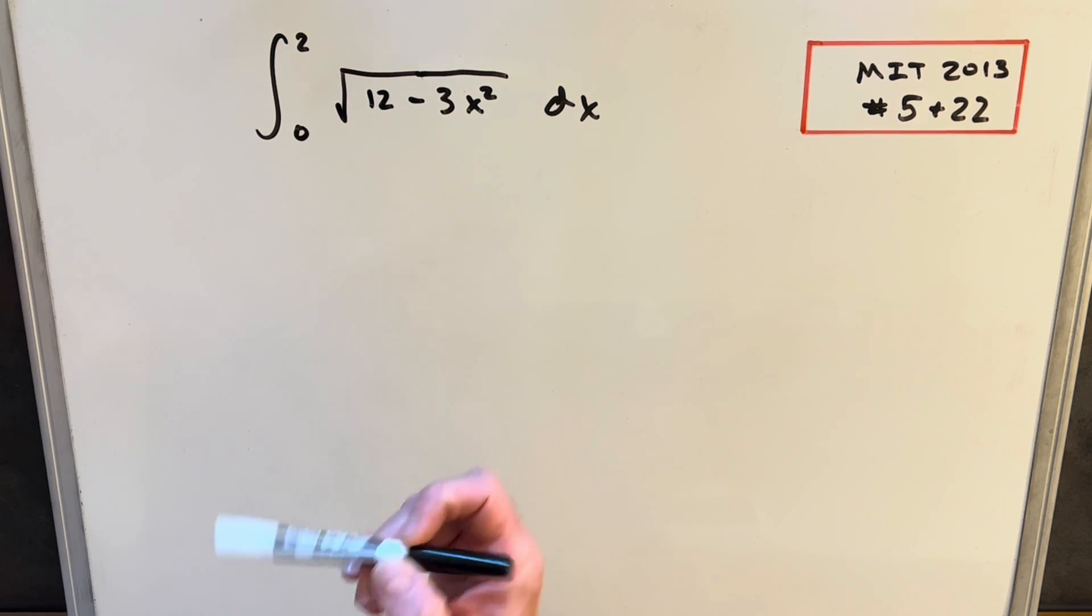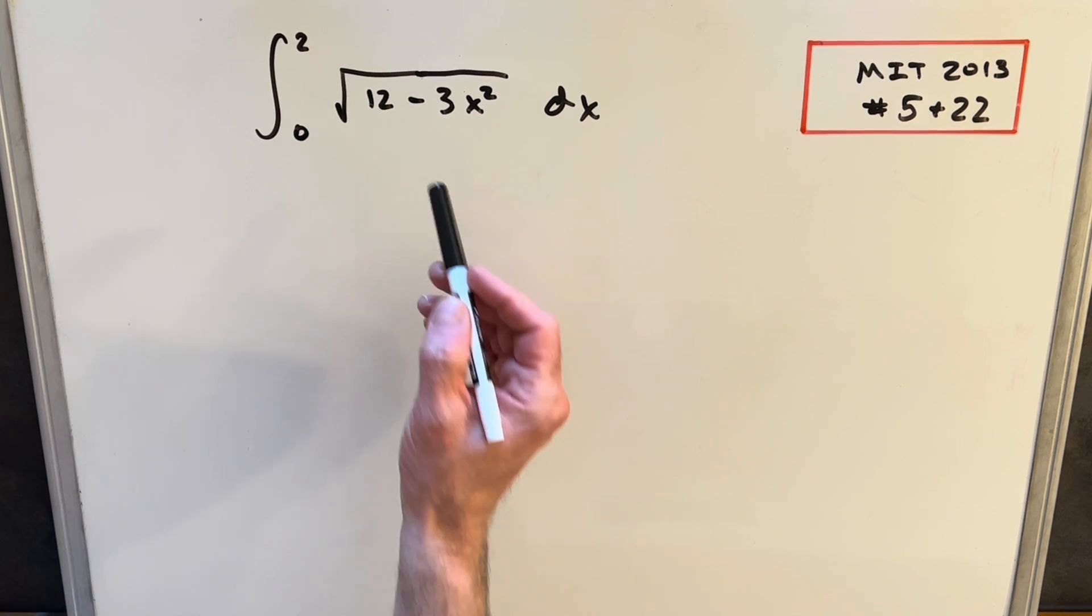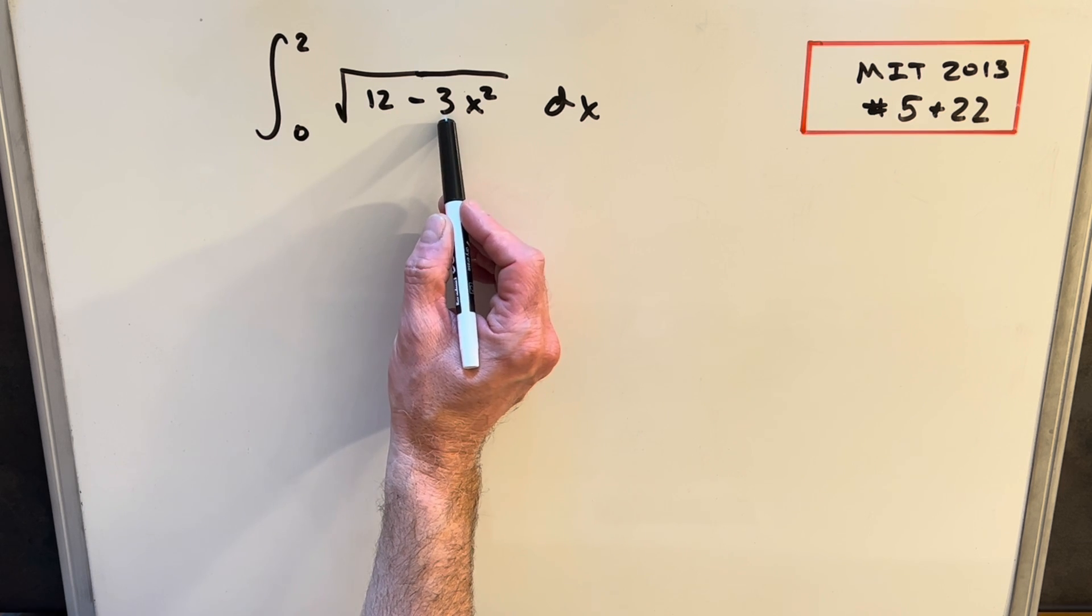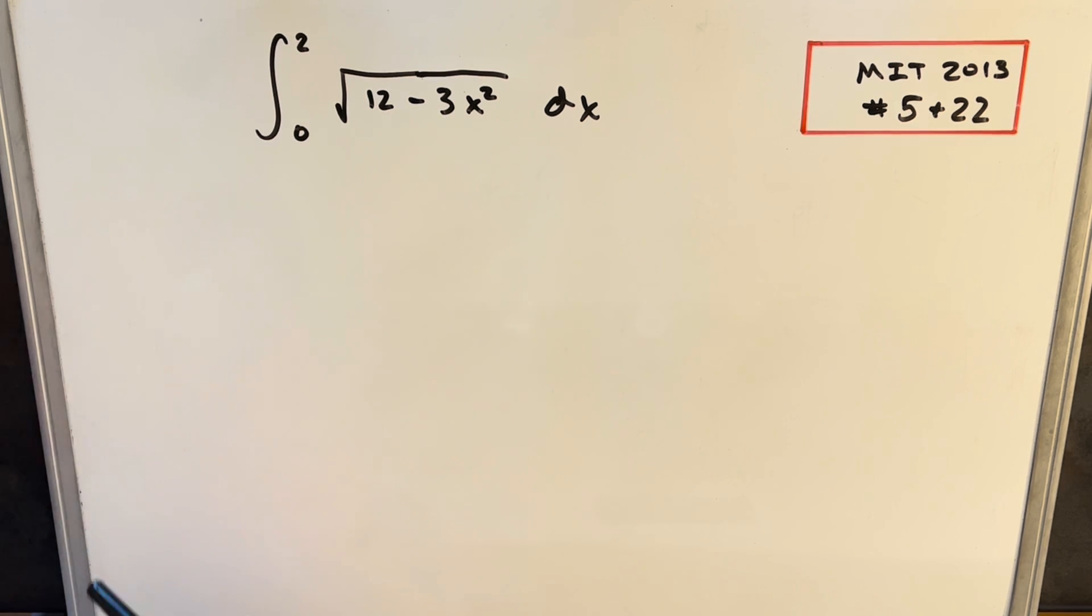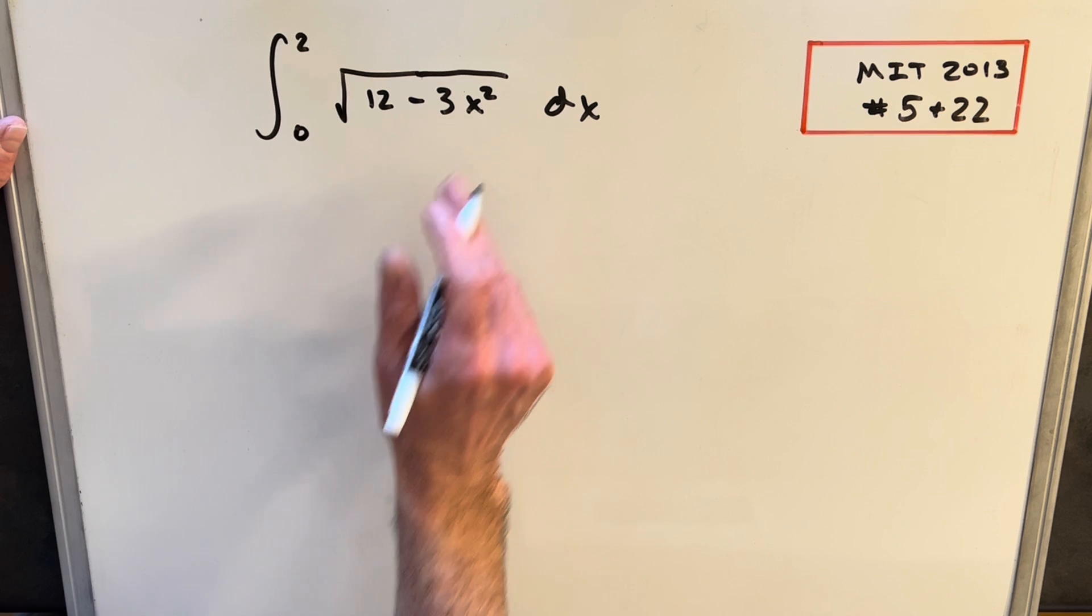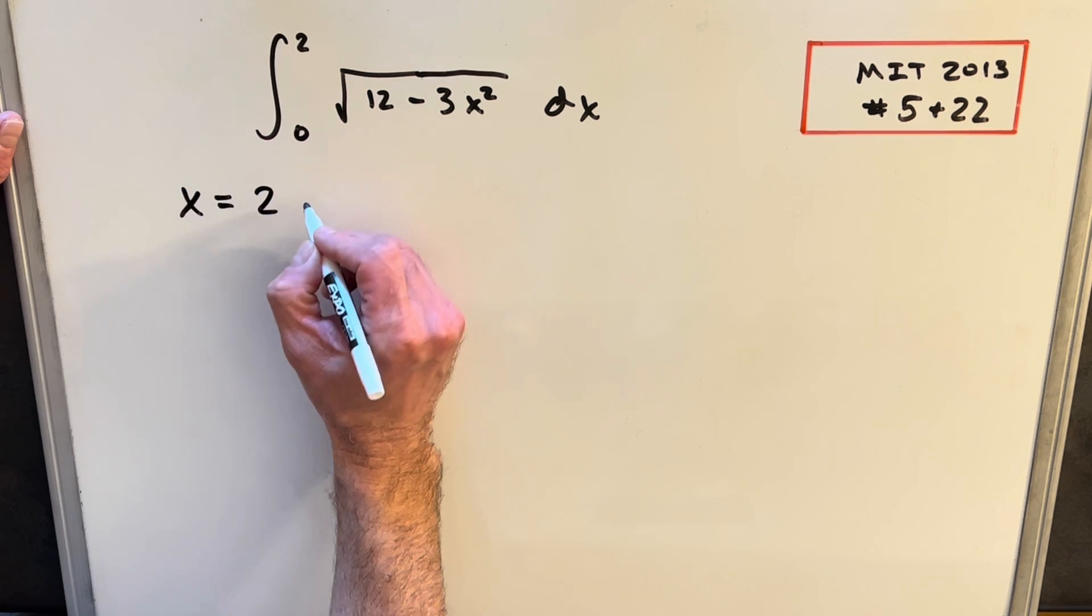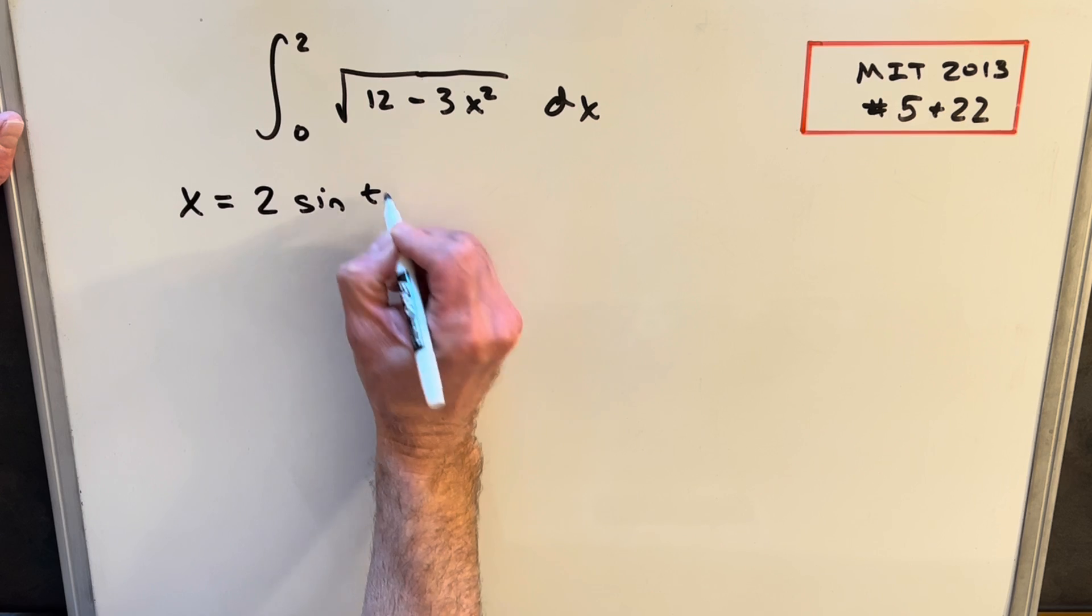I think what I want to do in this problem is use trig substitution, and it's not quite set up exactly how we want, but we can make this work. We need, what we want to do is we want to get the coefficient on here to be 12. So to do that, we need to multiply by a 4, and it's squared. So what I'm going to do is my substitution is going to be, for x, is going to be 2 sine of t.